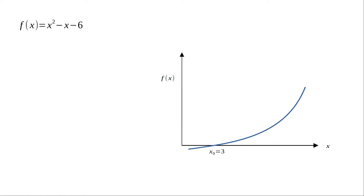What we do first is take two points. These two points are taken in the domain where the function is either positive or negative — you choose two values of x in the domain where the function is consistently positive or consistently negative. I have chosen them as x₀ and x₁, where x₀ is xᵢ₋₁ and x₁ is xᵢ.